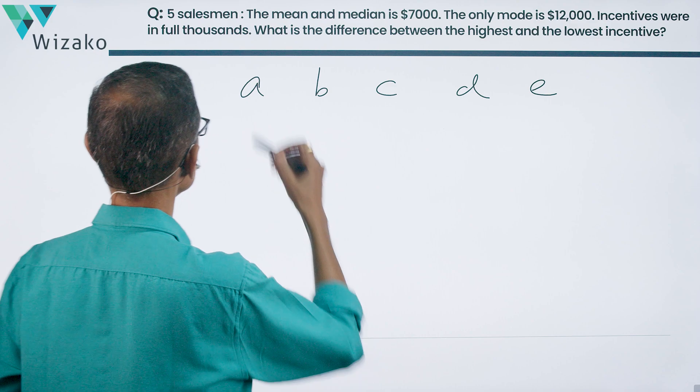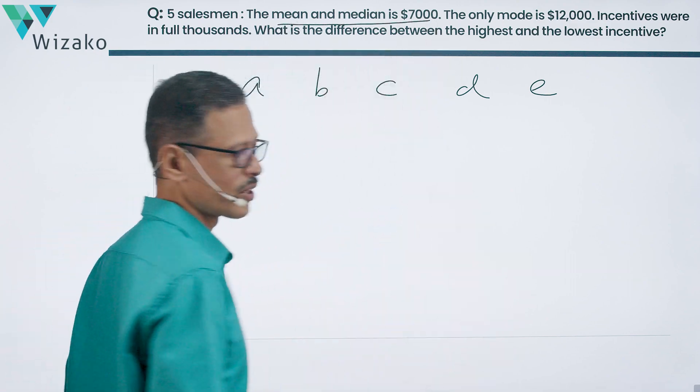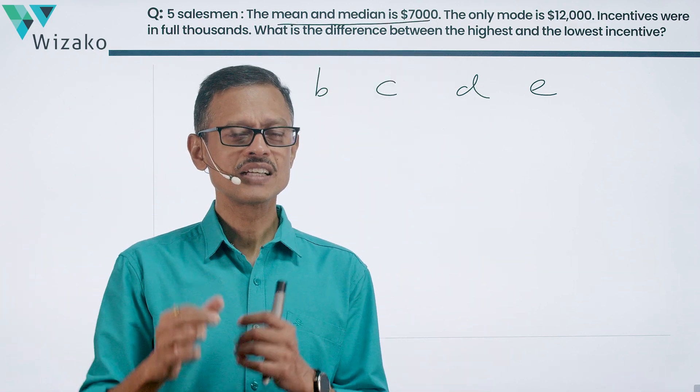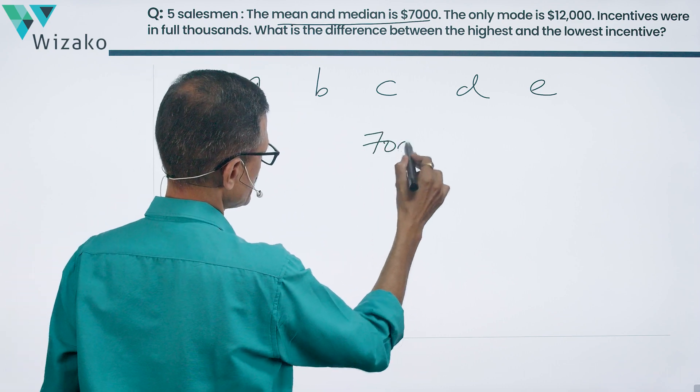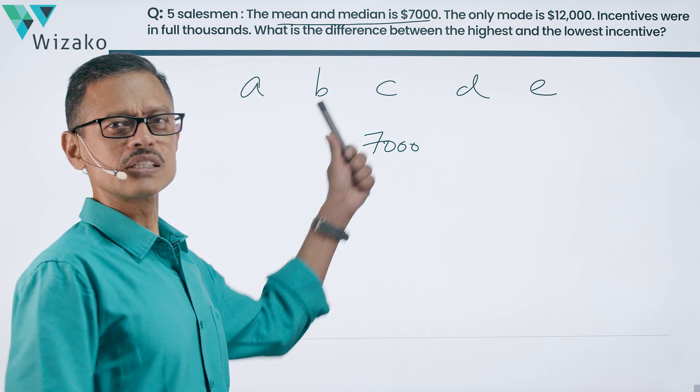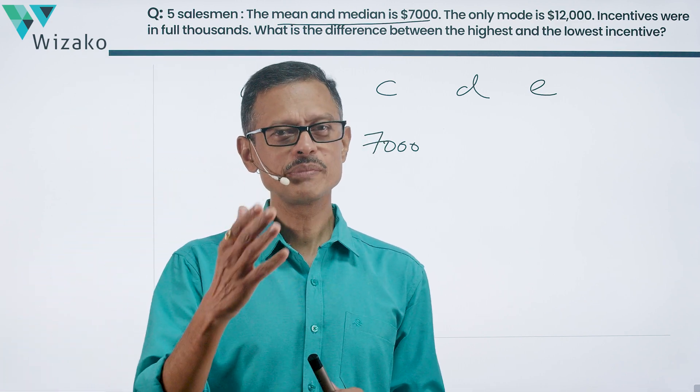Let's make sense of the first data point. Mean and median is 7,000. Arranged in ascending order, out of the five elements, the third one is going to be the median. So C is equal to 7,000. That is done. We know that this is also the mean. So let's make sense out of it.